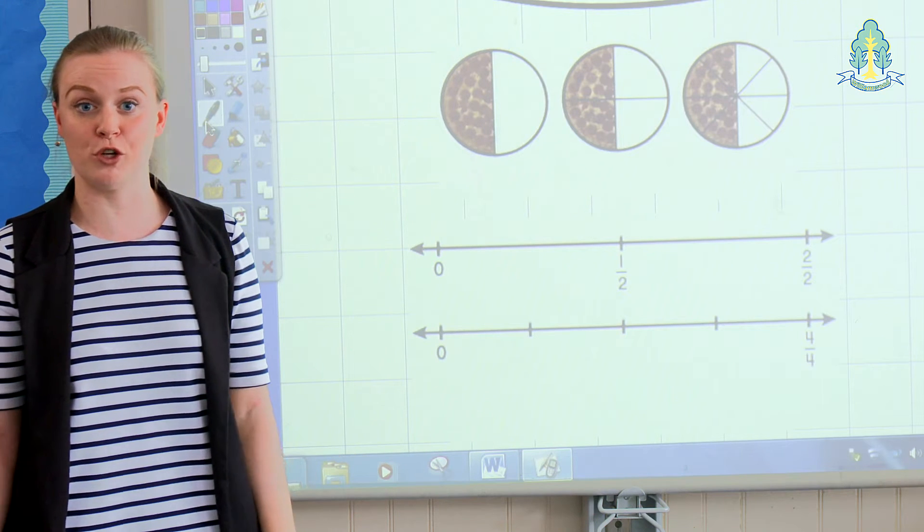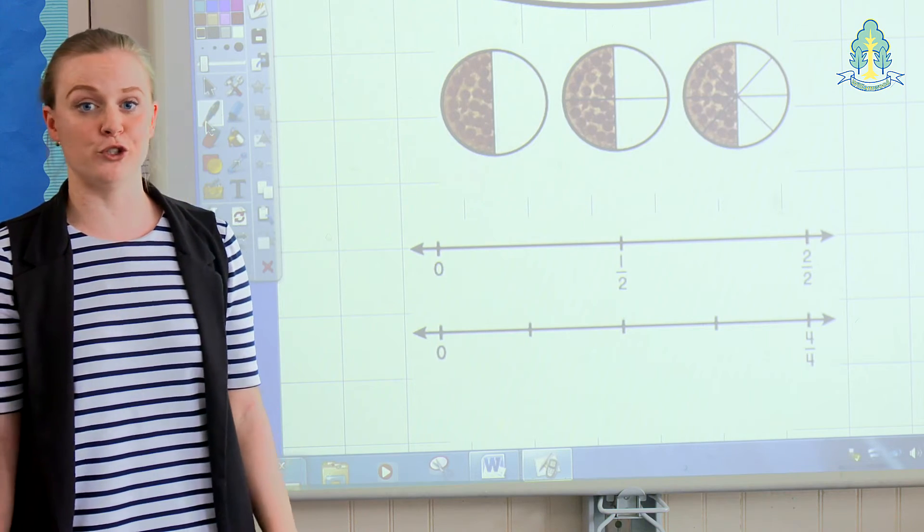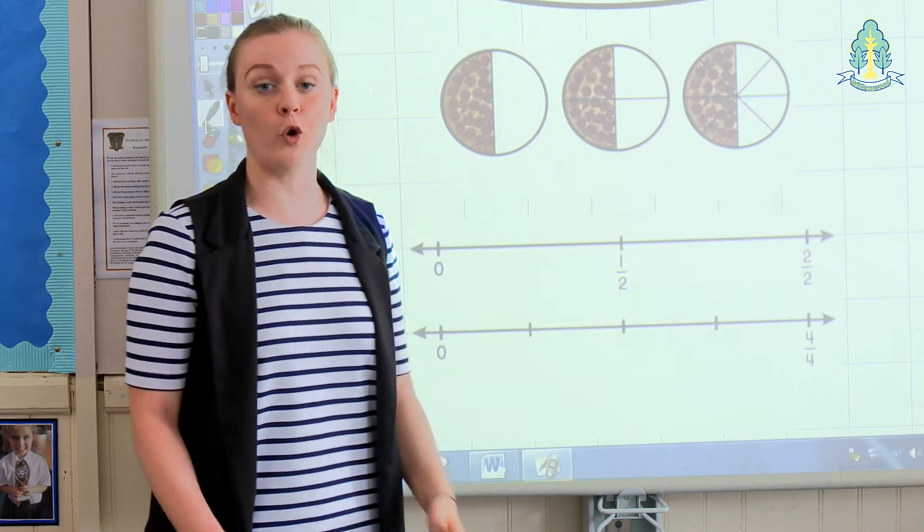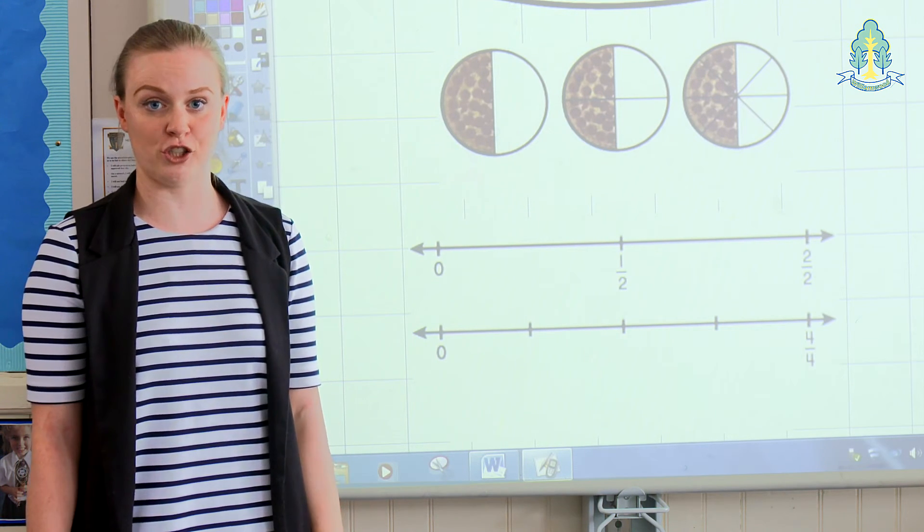The teacher may ask the children what pizza they would prefer to have and children would come to the conclusion that it doesn't really matter what one you get, they're all the same size. It would be highlighted that this is called an equivalent fraction at this point.